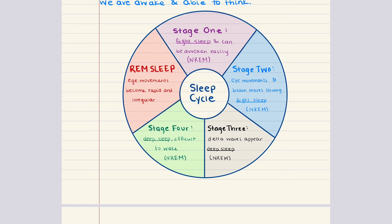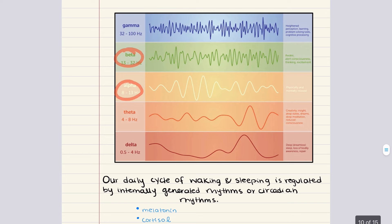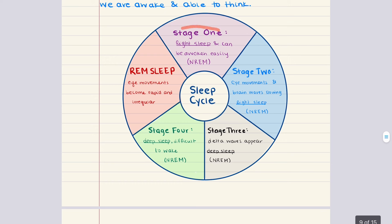Beta and alpha waves characterize brain activity when we are awake. Beta waves have a high frequency, occurring when a person is alert or attending to a mental task requiring concentration — they occur when neurons are randomly firing. Alpha waves occur when we are awake but relaxing with eyes closed; they're somewhat slower and more synchronized than beta waves. As soon as you doze off, you enter stage one of sleep, detected on the EEG by the appearance of theta waves — irregular waveforms with slower frequencies and higher voltages. This is light sleep; you can be easily woken up and it's categorized as non-REM sleep.